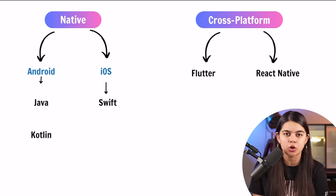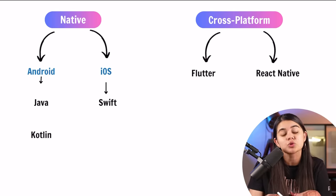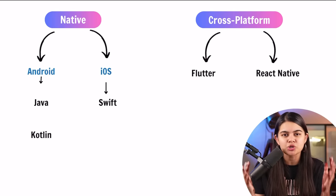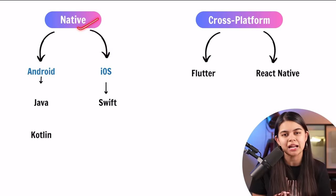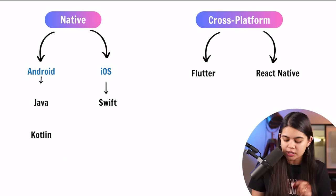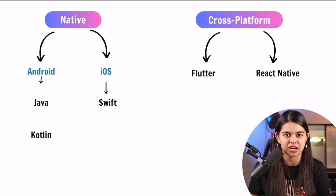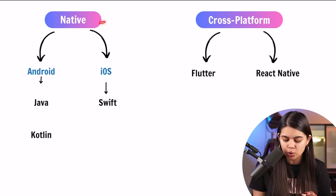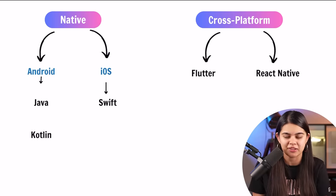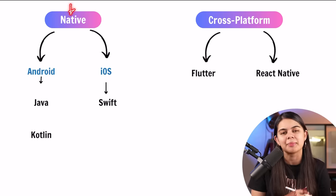There are pros and cons to both. The biggest pro of native development is that major tech companies are working on native app development — companies like Zomato create separate Android and iOS apps. The biggest benefit of cross-platform is that you write code once and it runs on both Android and iOS. The decision depends on your preference, but if you are a beginner, I think you should start with native app development.